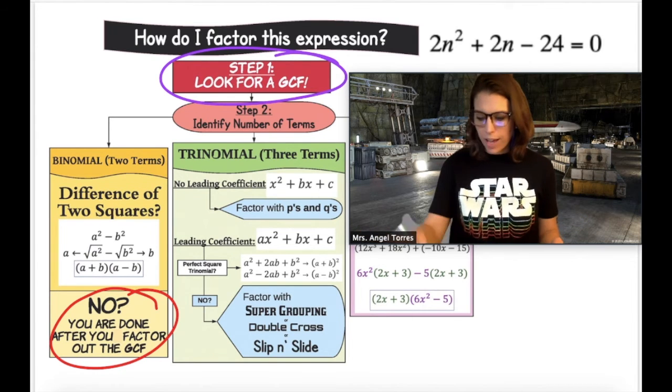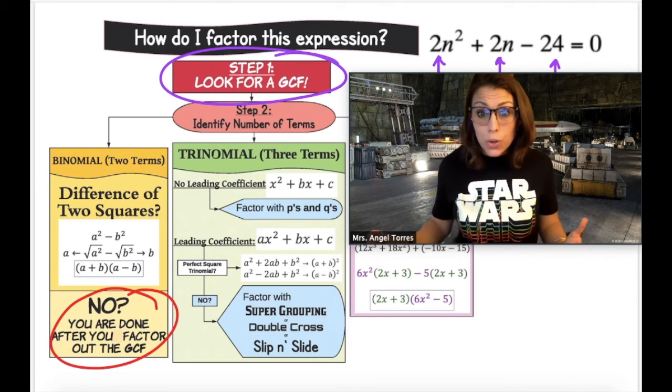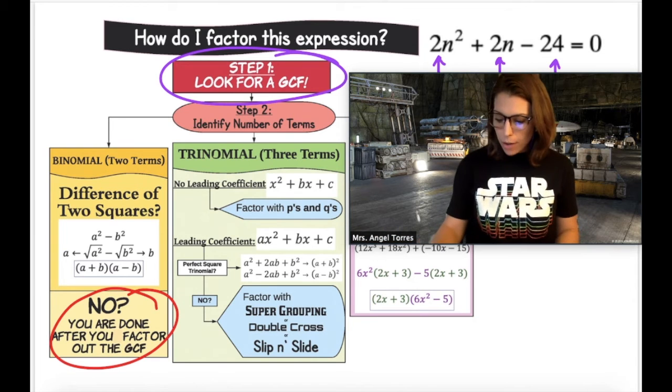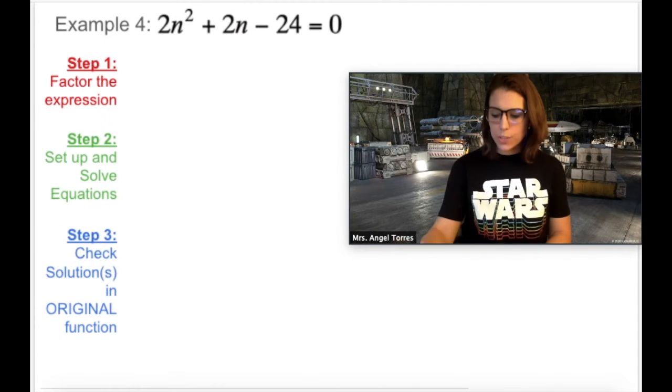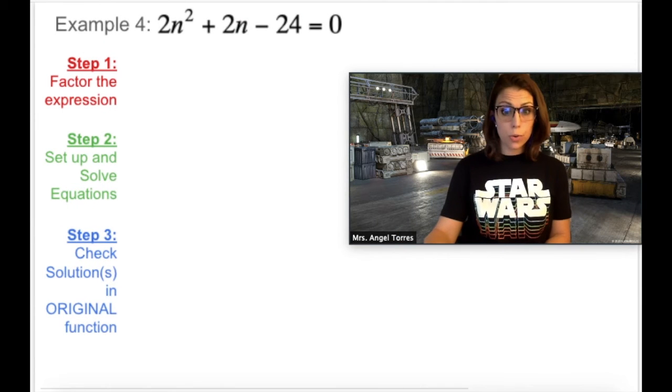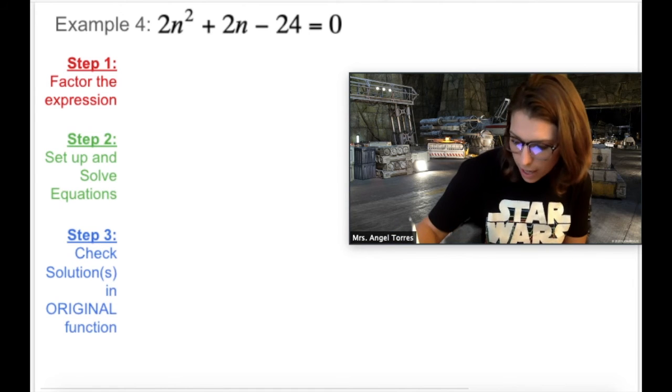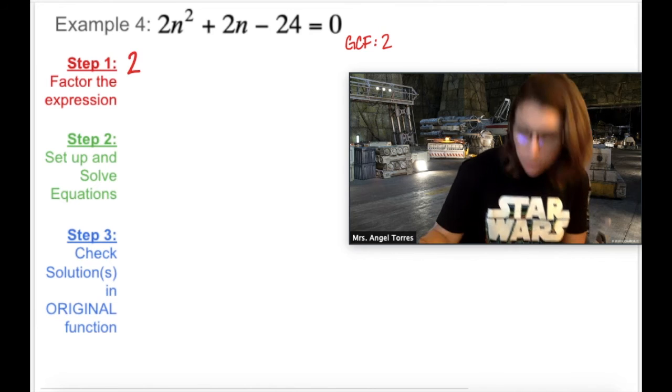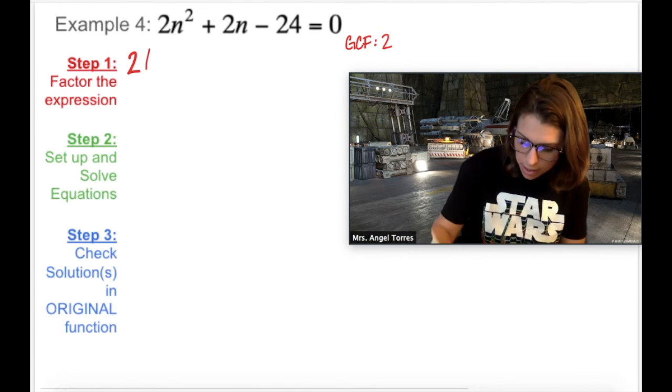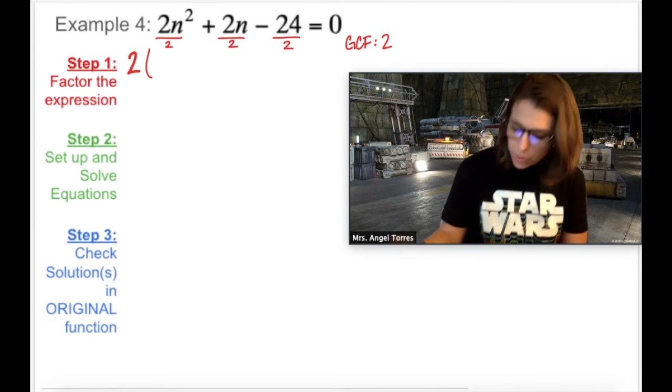Do these three terms have a common factor? We have a 2n squared, a 2n, and a 24. They do have a common factor, 2. And if I were to factor out 2, that would be a trinomial without a leading coefficient. Okay, so here we're going to factor out the GCF 2 first. Then we're going to factor it using P's and Q's. So if I factored out this GCF 2, that means 2 is now going in the front of my new product. That means I'm essentially dividing each of these terms by 2. So what does that leave me with? Well, that leaves me with n squared plus 1n, or just n, minus 12 equals 0.